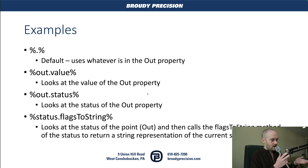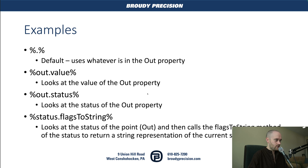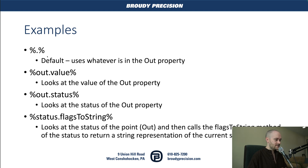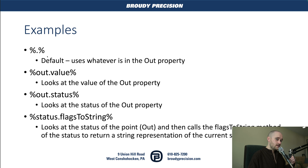You can keep going basically an unlimited number of times. These examples come out of the Niagara documentation on using B Format. The default — percent sign, dot, percent sign — is going to show you whatever the out property is of the point or object you're looking at. Typically it has way more information than you want, so you narrow it down with something like out.value, which looks specifically at the value of the out property.